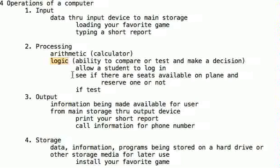Based on logic, the computer can make a decision where it performs one of many different choices. I see logic like driving a car and coming to a fork in the road — you go left or you go right, but you can't go both ways. The computer's ability to perform these tests is logic. So we have four different operations of a computer: input, processing, output, and storage.